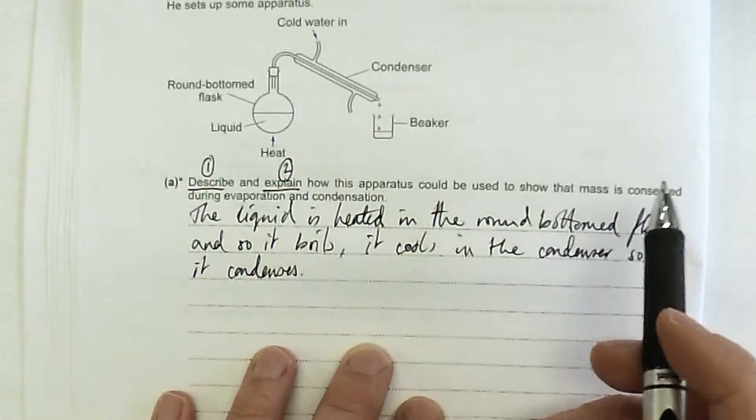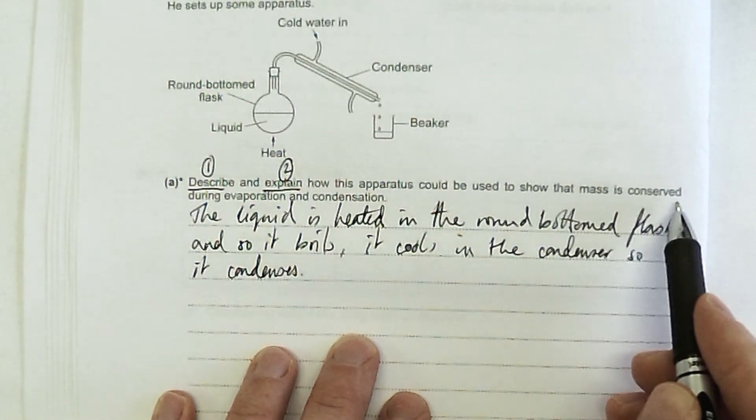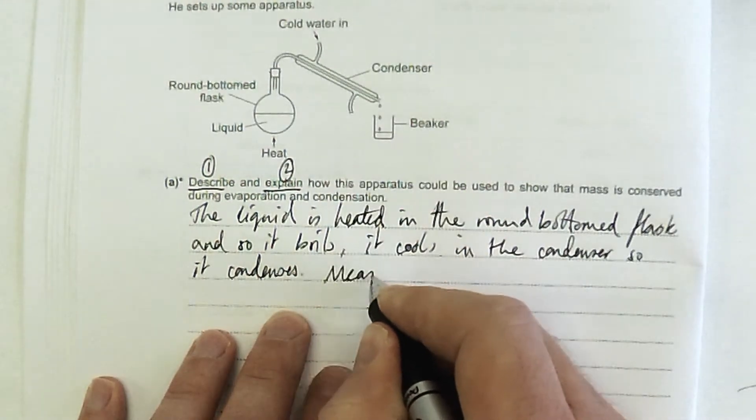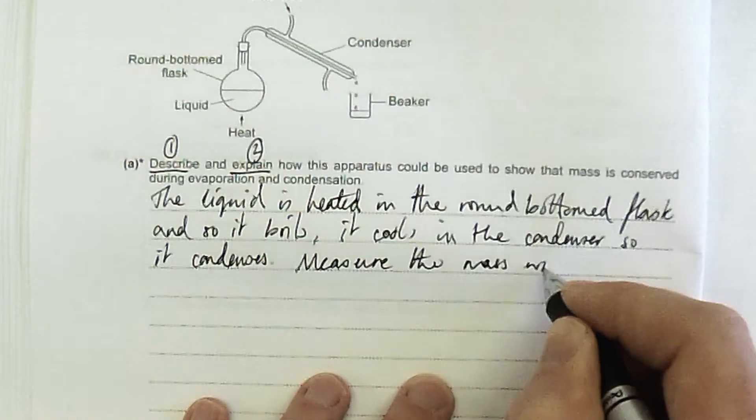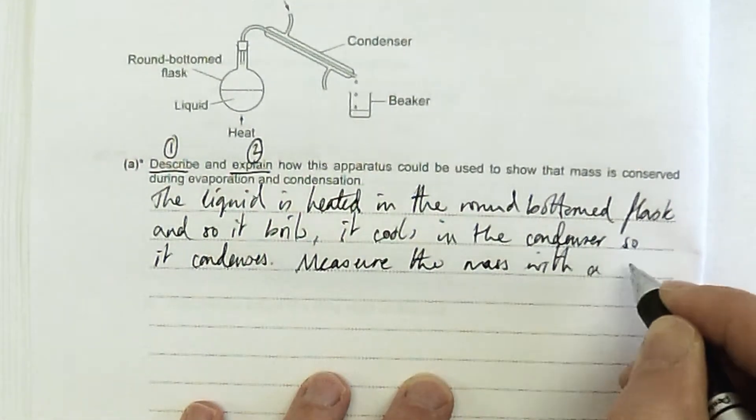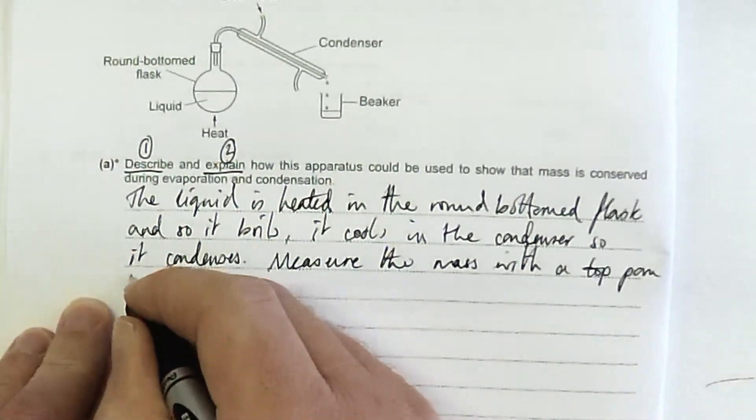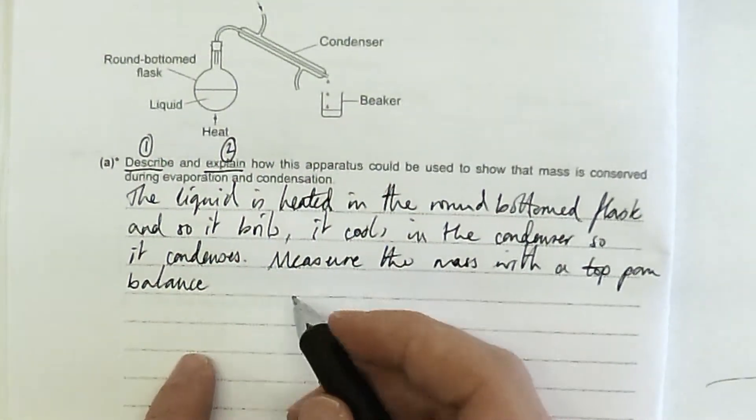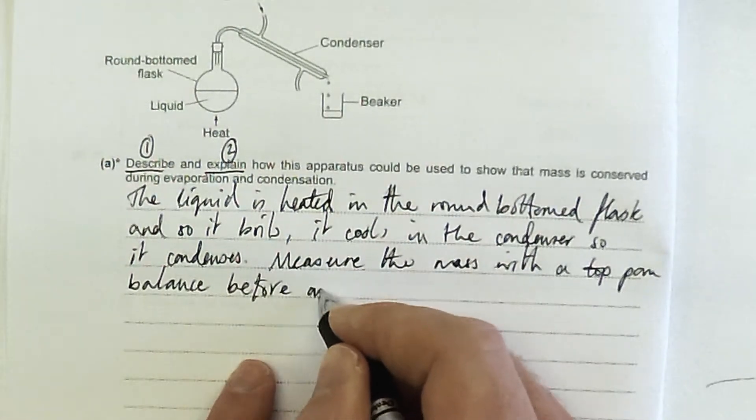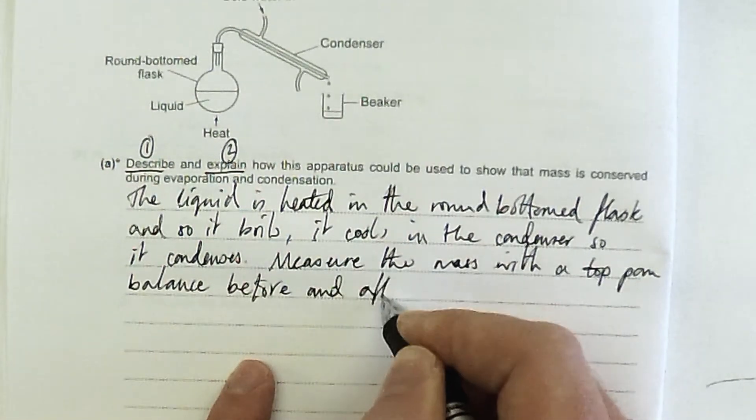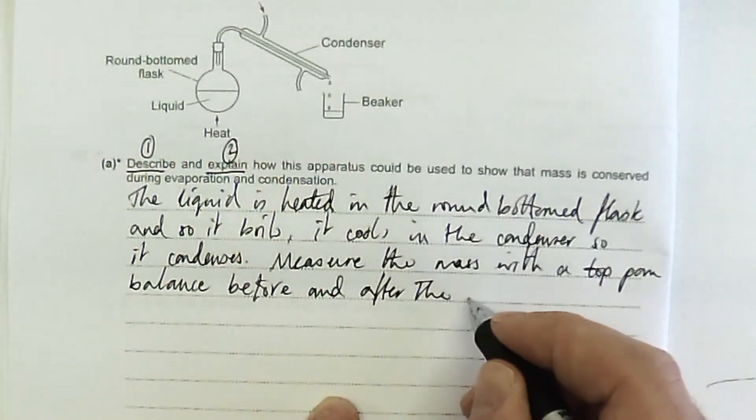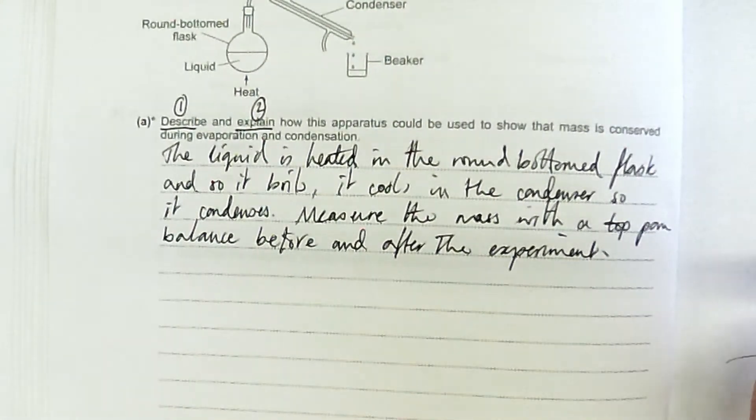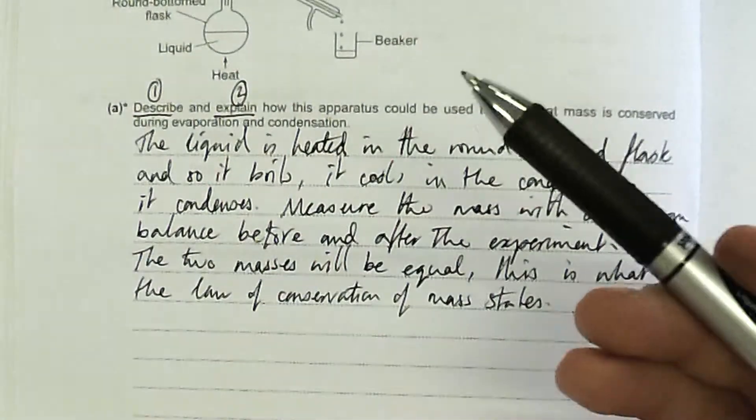How this apparatus should be used to show that mass is conserved. I have to say what conservation of mass is and how we can show that. We can measure the mass before and afterwards using a top-pan balance. Get that extra detail in there. Measure the mass with a top-pan balance before and after the experiment. That's my first paragraph. Now I need to explain that.